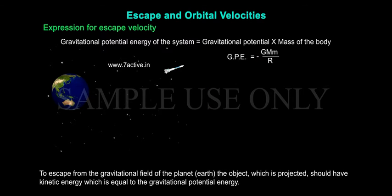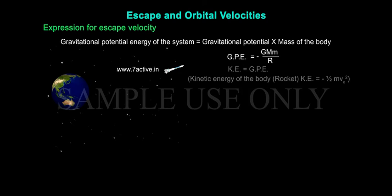To escape from the gravitational field of the planet Earth, the object which is projected should have kinetic energy which is equal to the gravitational potential energy. Therefore, kinetic energy of the body KE is equal to half m v_e squared. Therefore, half m v_e squared is equal to GMm by R.